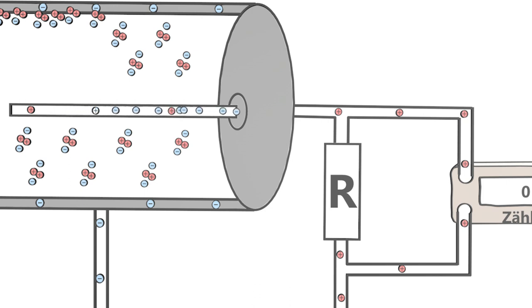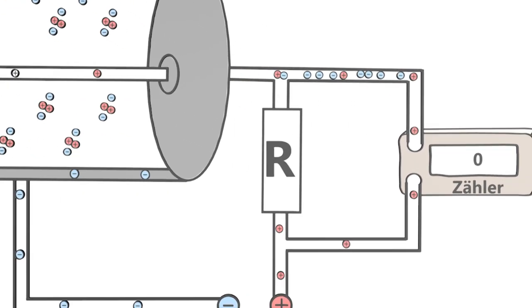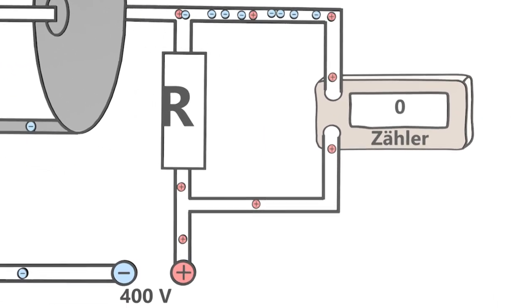You can get to the positive pole in two possible ways. Once through the very large resistor R and once through the counter. Since the resistance is very high, most of the electrons flow through the counter. The counter registers the current pulse and now shows the value 1. The value increases by 1 for each current pulse.